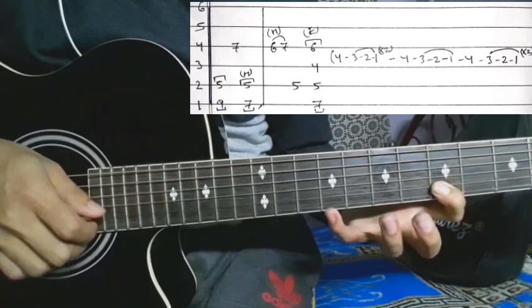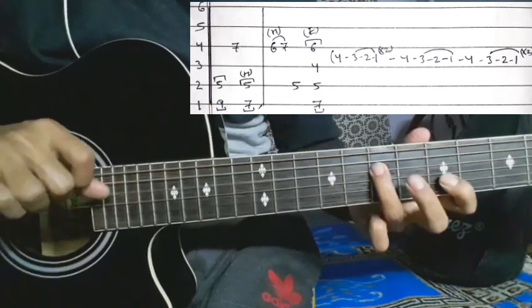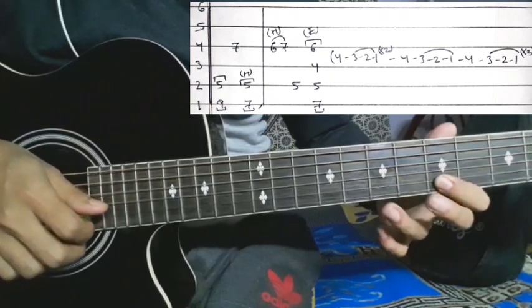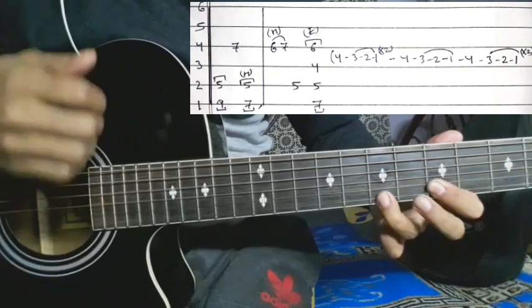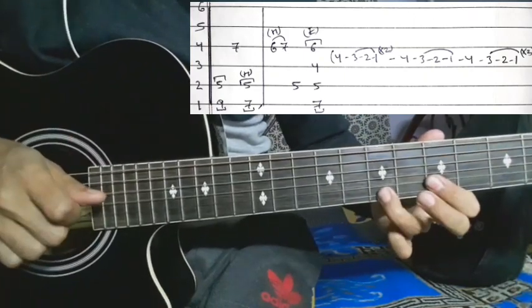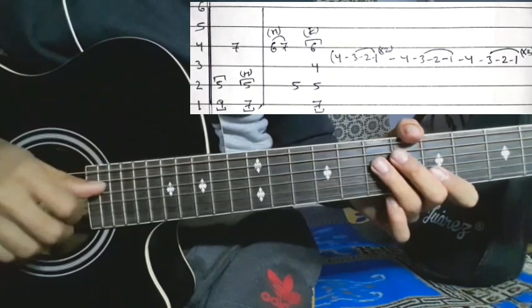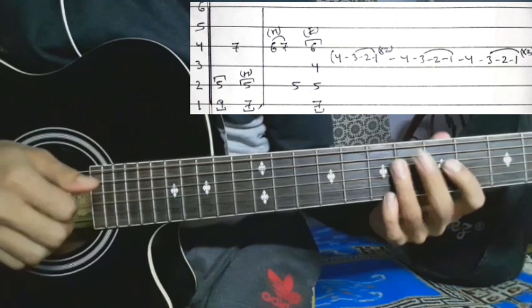Fourth section continues: open to five, second string five, first string nine with picking, first string seven, then second string five, first string seven. That's the fourth section. Fifth section is the last major section.